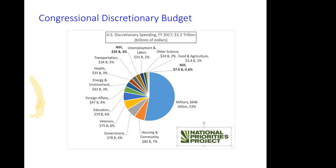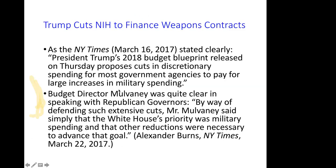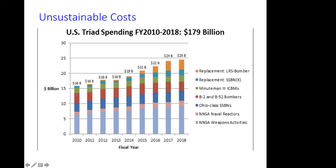Where does that really come from? It was going on before Trump. Trump's budget director Mick Mulvaney said simply that the White House's priority was military spending, and that other reductions were necessary to advance that goal. That happened in his first budget, second budget, and the current budget. The most egregious part is the proposal to spend something like 1.7 trillion dollars on upgrading all three components of the nuclear weapons triad: submarines, bombers, and ICBM missiles.